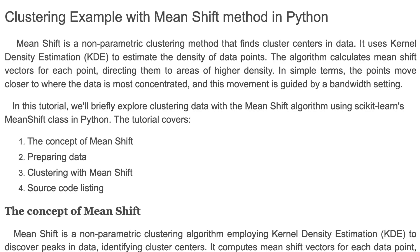The algorithm calculates a MeanShift vector for each point, directing them to areas of higher density. In simple terms, the points move closer to where the data is most concentrated, and this movement is guided by a bandwidth setting. In this tutorial we'll briefly explore clustering data with the MeanShift algorithm using scikit-learn's MeanShift class in Python.